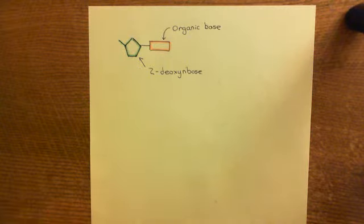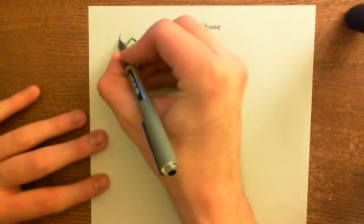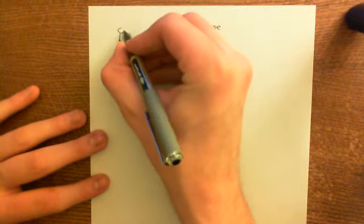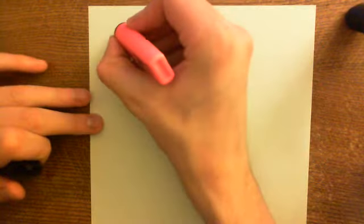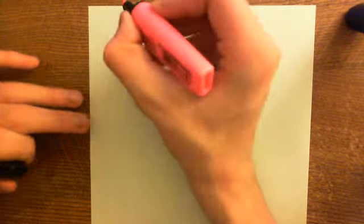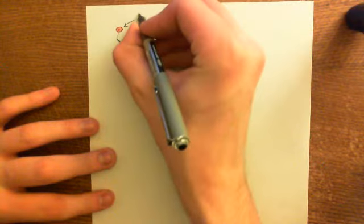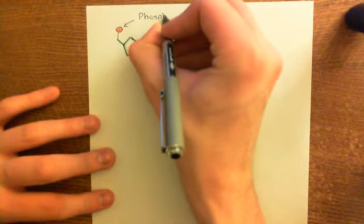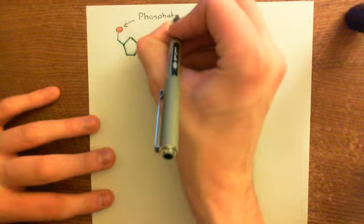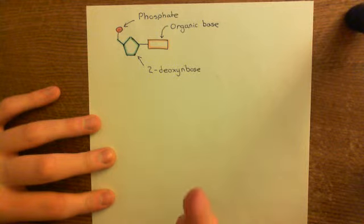That's the sugar used in DNA. Off the 5-prime carbon you then have a phosphate group, shown here in red. This is the structure of a nucleotide. You polymerise these things together to make a single strand of DNA, and then you put two complementary strands of DNA which are running anti-parallel together to make the double strand of DNA.